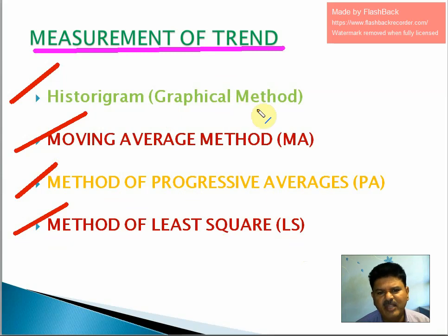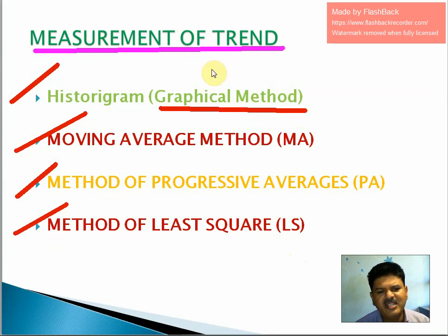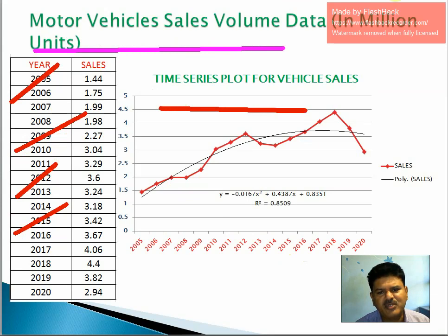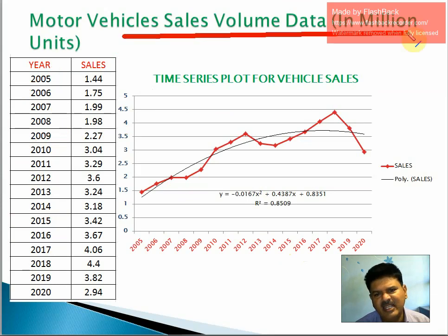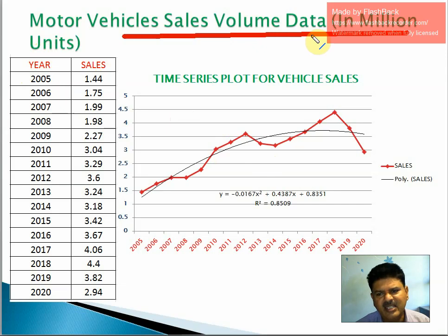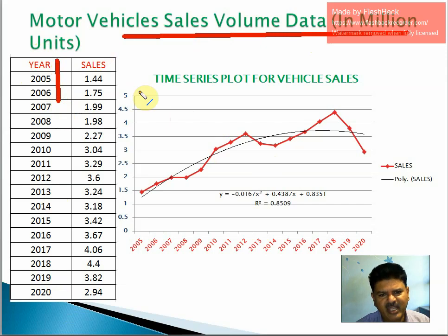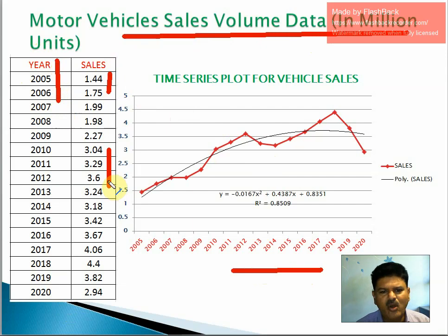The histogram method is a graphical method — by visualizing the graph you can get an idea about the trend. I have plotted this using Excel, with motor vehicle sales volume data given in million units. The data covers years from 2005 to 2020, with year on the x-axis and sales on the y-axis.